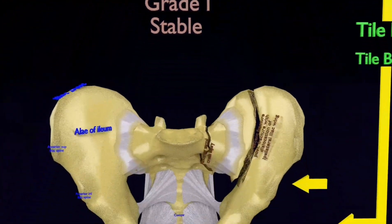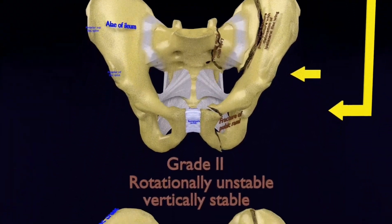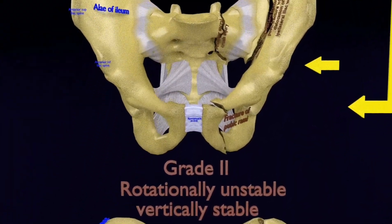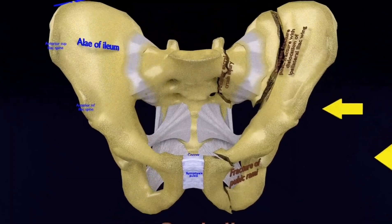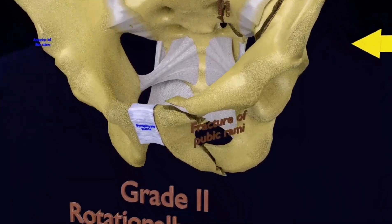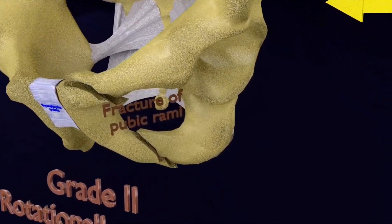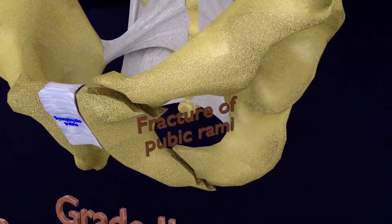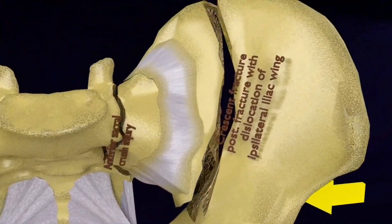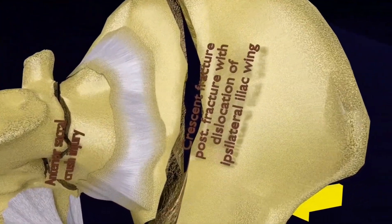This is the grade 2. It is rotationally unstable and vertically stable. Here, you visualize a fracture of the pubic rami and posterior fracture with dislocation of the ipsilateral iliac wing, also crescent fracture.